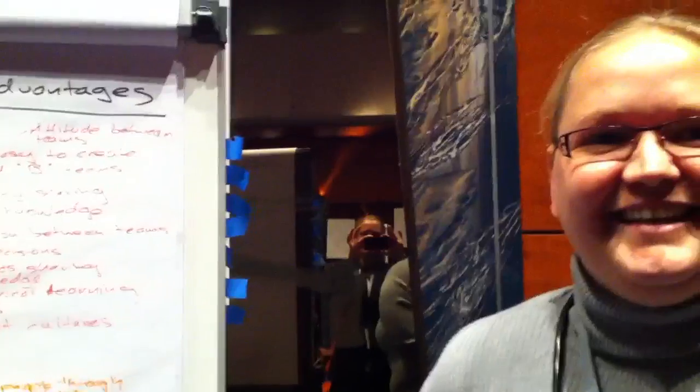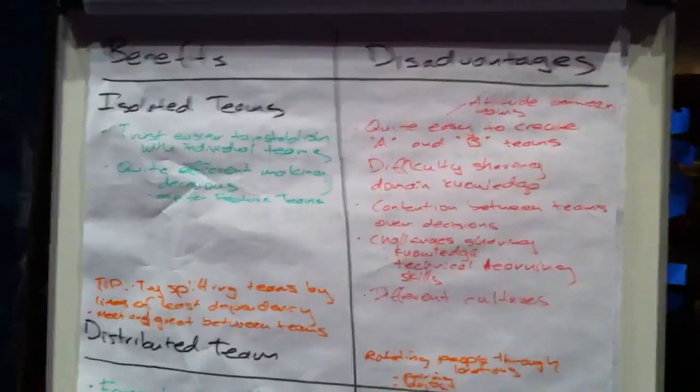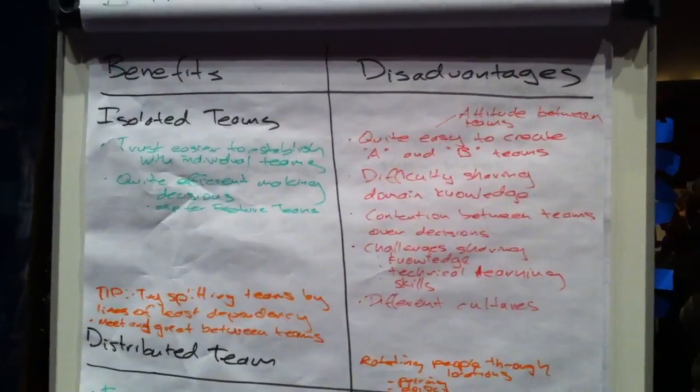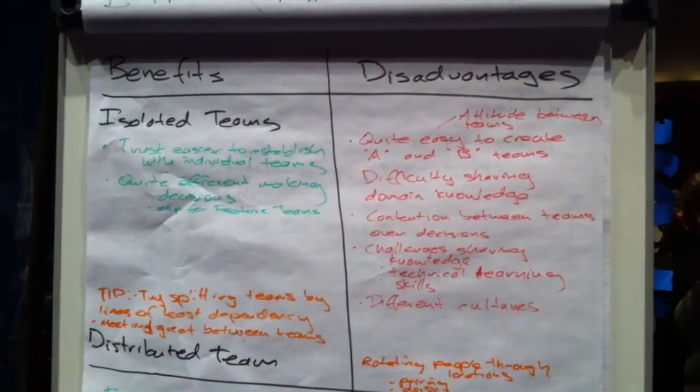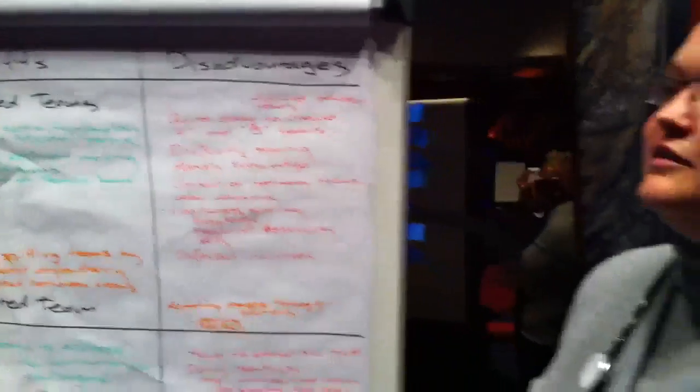So we kind of said there were different benefits and disadvantages to each of the models. Probably the reason for using each of the models is different. For the isolated teams, we said it was quite easy to establish trust within those individual Scrum teams because they are co-located.